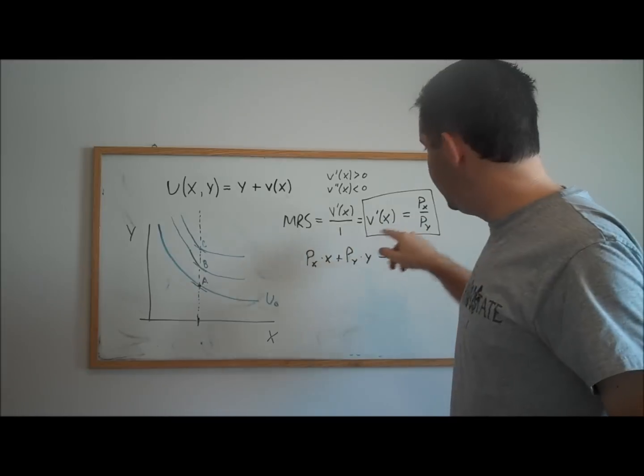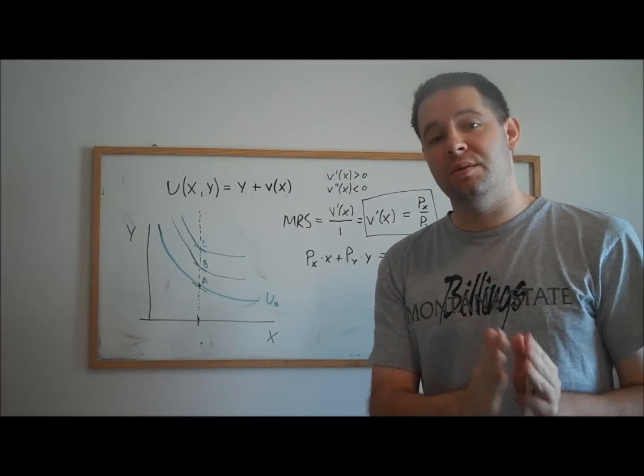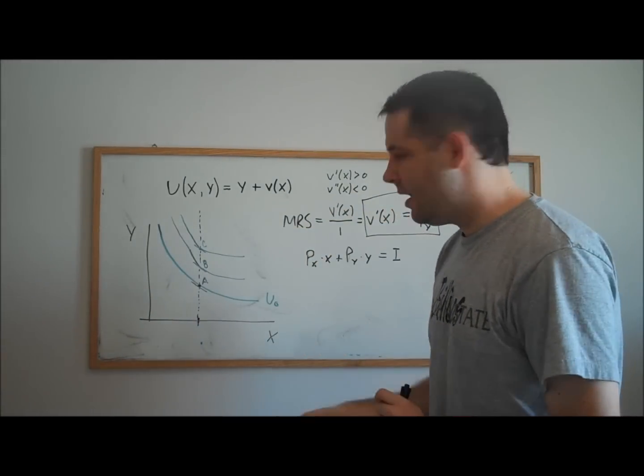And notice, it's a particular case in that you can use the marginal rate of substitution equals the price ratio to solve perfectly for the demand for good x.